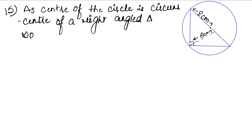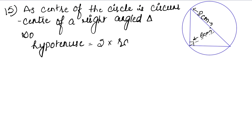So the hypotenuse equals double the radius — that is, the diameter of the circle. For a right-angled triangle, the hypotenuse is the diameter of the circumcircle. So the hypotenuse is 2 × 8 = 16 cm.